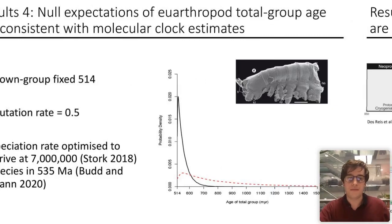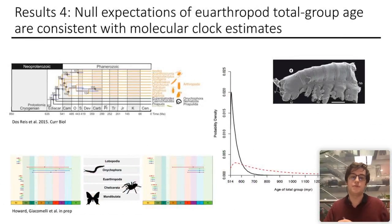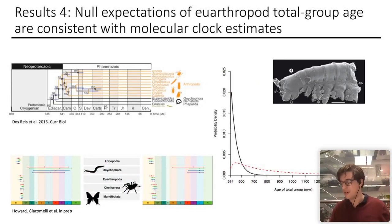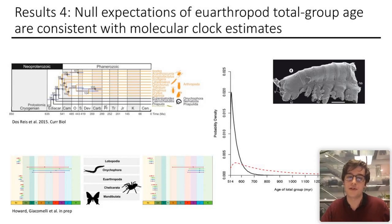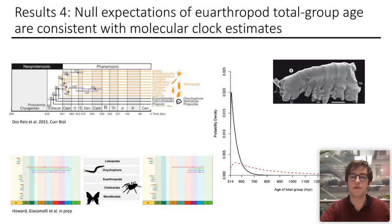Thinking about molecular clock studies which have looked at this, I personally can't think of any that have a 95% credibility interval exceeding our higher null expectation of 670 million years. That's not to say that the clocks are correct, but we're just saying that these findings are in line with the null expectations based on these birth-death models that we've implemented and have previously been implemented.